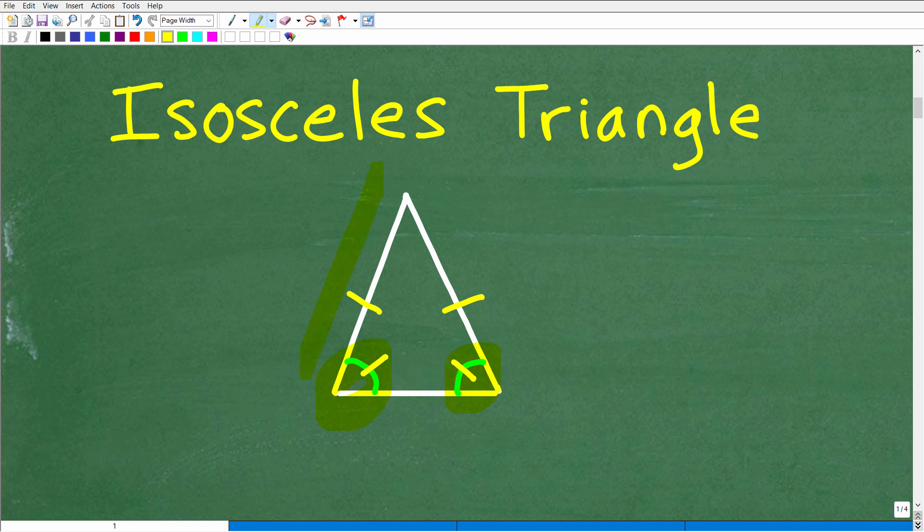Okay, so when you have an isosceles triangle, the sides here, two sides, are the same length, same measure, i.e. congruent. And the base angles are the same or congruent. So that is the isosceles triangle.